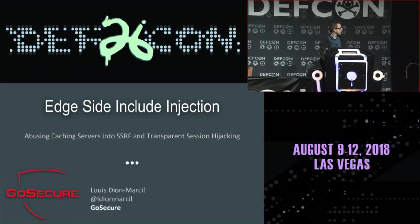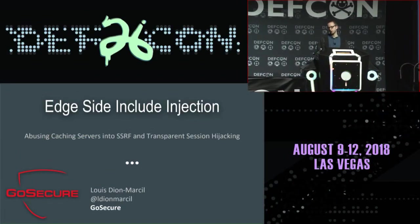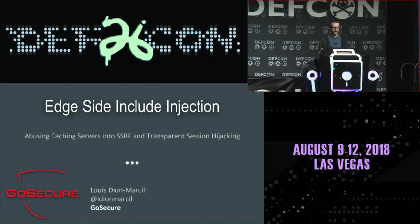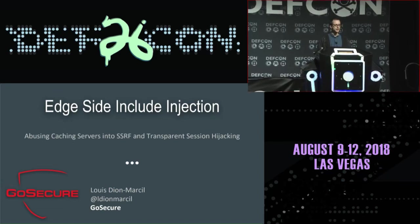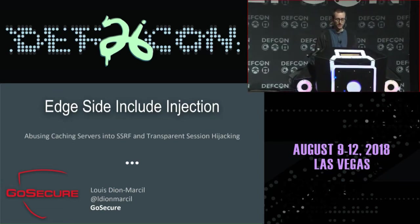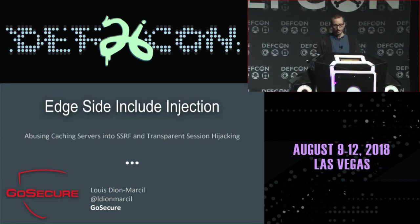So this is edge side include injection, abusing caching servers into server-side request forgery and transparent session hijacking. I know that's a very long title meant to mention some of the many things that you can do with edge side includes, especially when you're injecting it. For the rest of this talk, we'll be referring to edge side includes as ESI for convenience, because that's a mouthful.